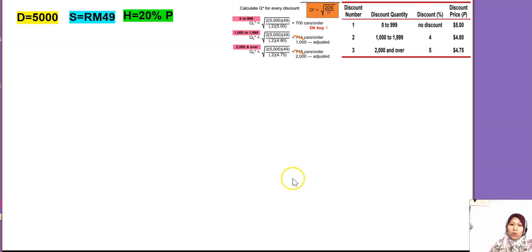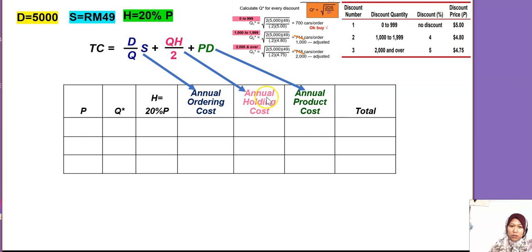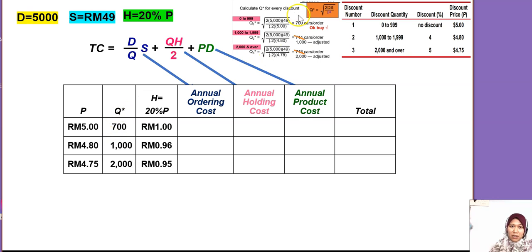Now we calculate the total cost. In quantity discount we use the total cost formula, and it's better to have it in table form for easy calculation. We need to fill in the price, Q, and H. Set up columns for ordering cost, holding cost, and product cost. The three prices are 5 ringgit, 4.80, and 4.75. The Q values are 700, 1,000, and 2,000 respectively.